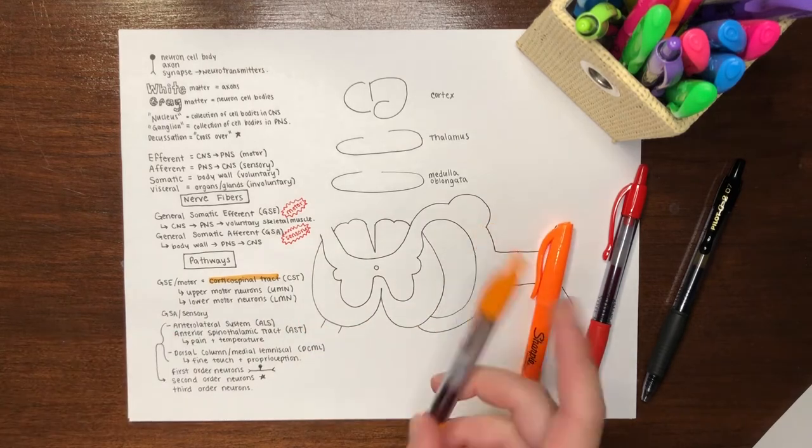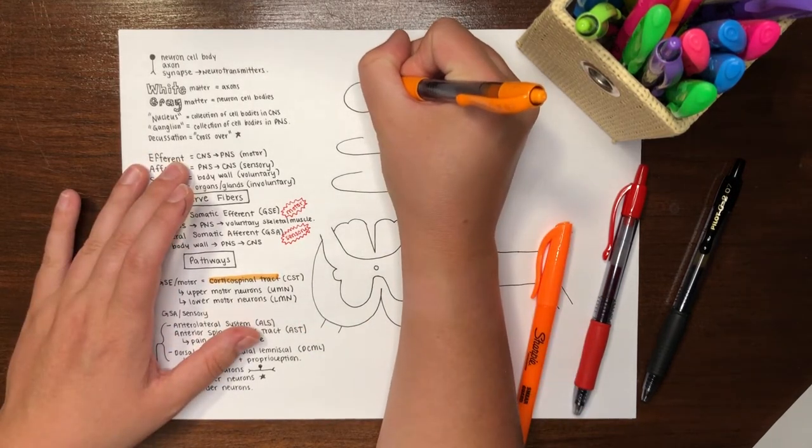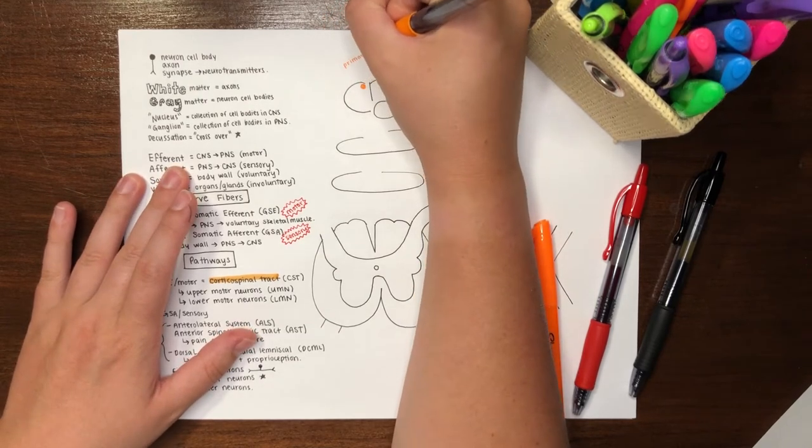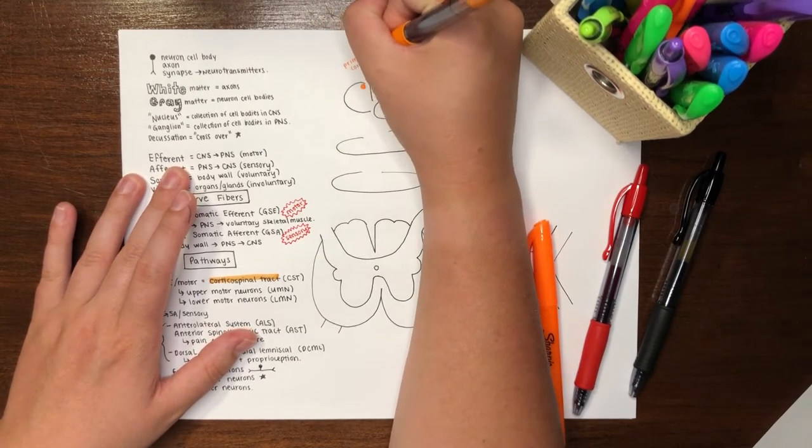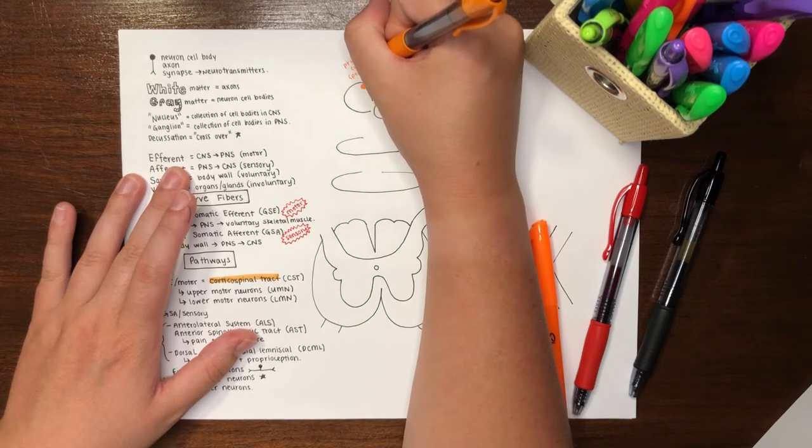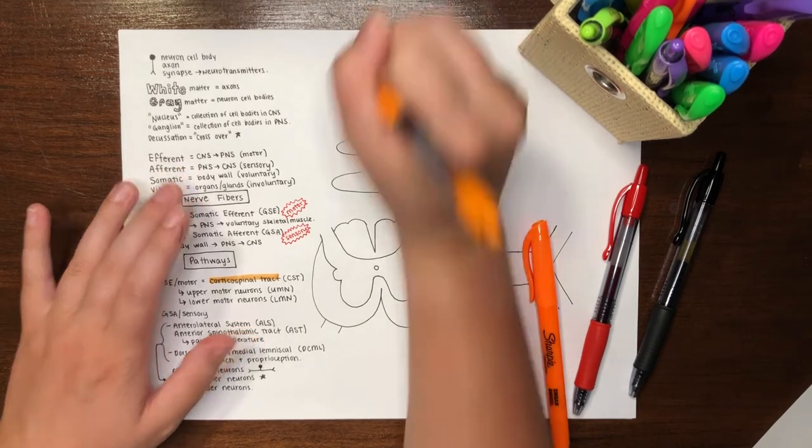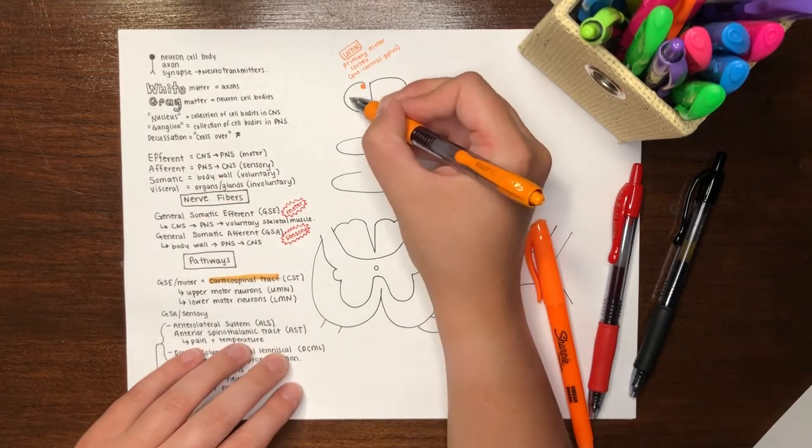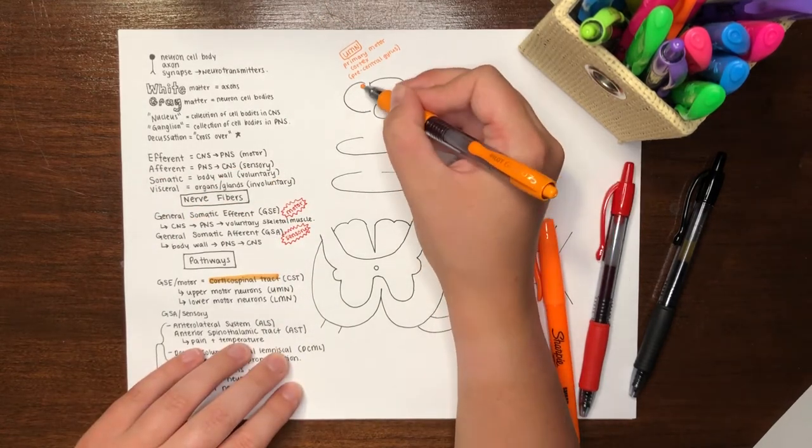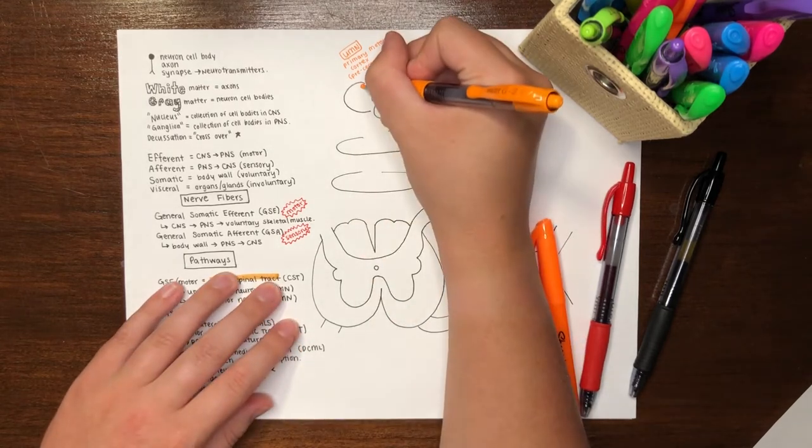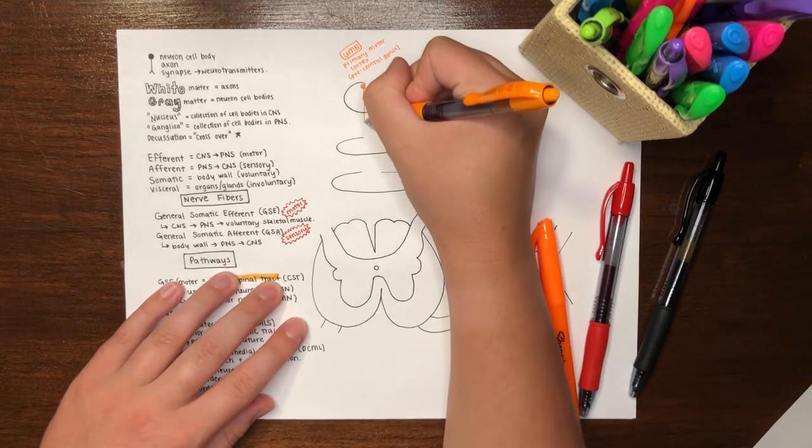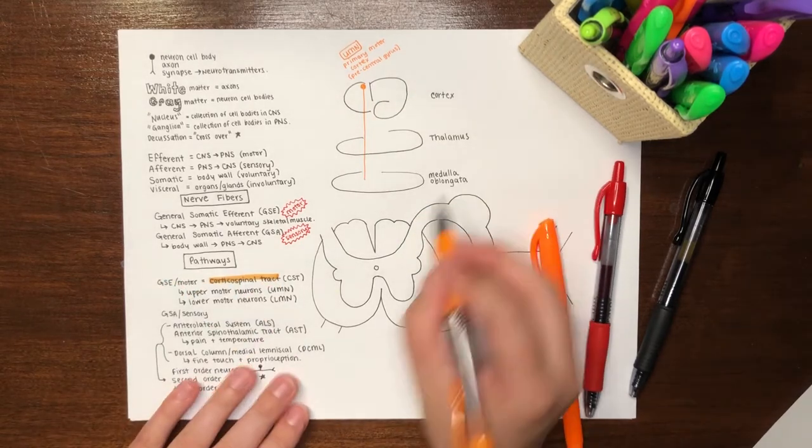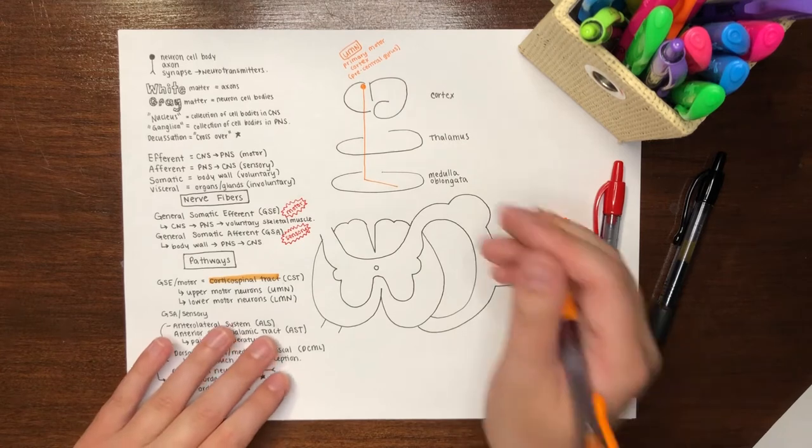For the CST, we will begin our pathway in the primary motor cortex, located anterior to the central sulcus in what is called the precentral gyrus. Neurons in this area will communicate with other regions of the frontal cortex and the thalamus to determine what movements to execute. Once an action is approved, upper motor neurons will carry the signal from the cortex, descending through white matter tracts in the brain and brainstem until it reaches the medulla oblongata, where it crosses over in the medullary pyramids.